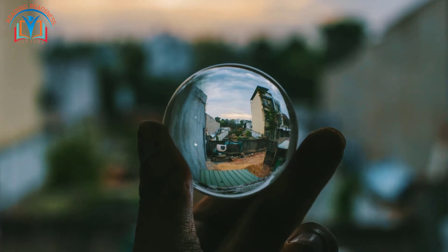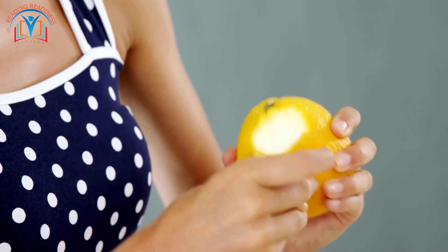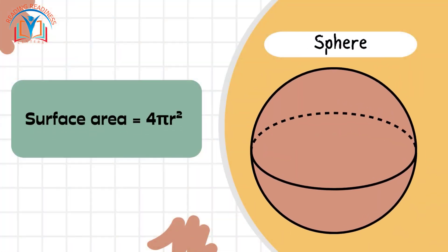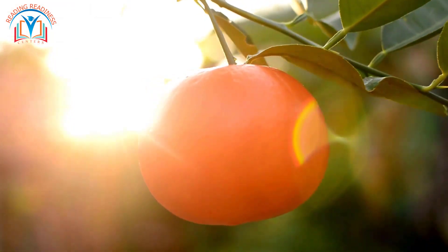Spheres. Imagine peeling an orange. The skin is the sphere's surface. Surface area. Picture a giant, juicy orange.